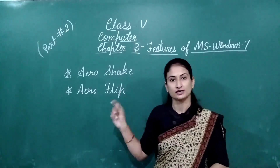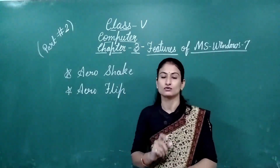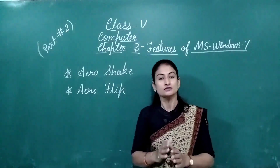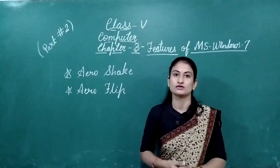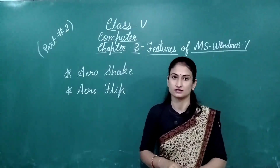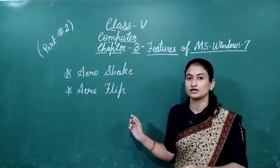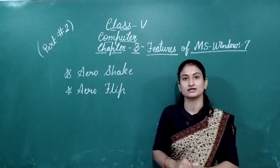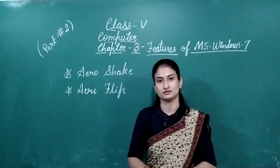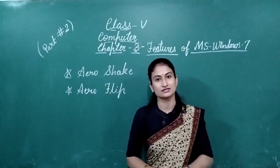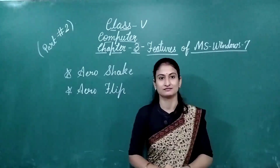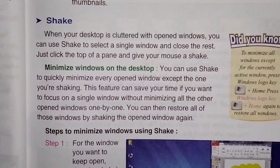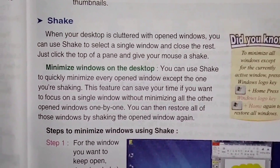This Shake feature will close and open windows. And the Flip feature allows us to flip through windows and view other open windows. This is discussed in detail in the book. After we discuss the question and answers, we can start with the book. So kids, in the last class we saw the Arrow Pick feature.